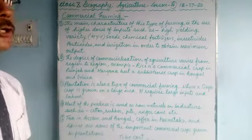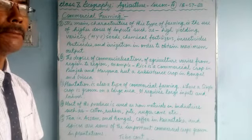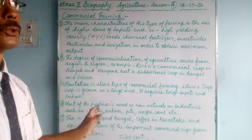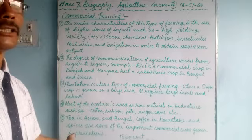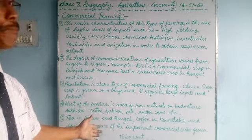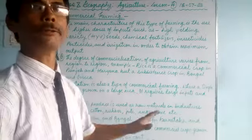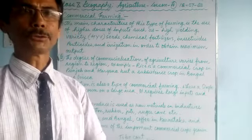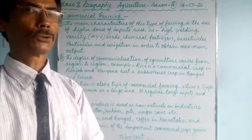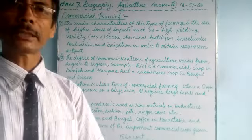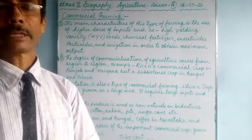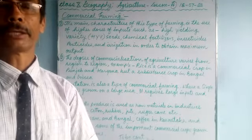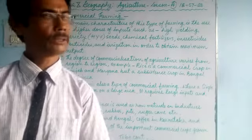In commercial farming, huge amounts of inputs are used in order to obtain maximum output. Commercial farming is done for markets — to sell and earn more and more profits. That's all for today. We'll meet in the next class and continue our lesson. Thank you very much for watching. Stay safe and continue your studies.